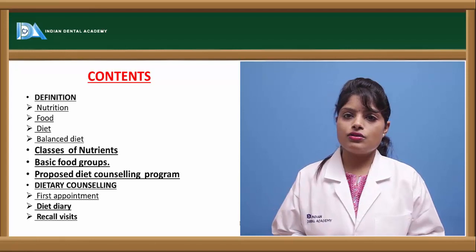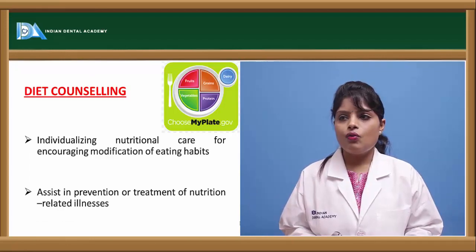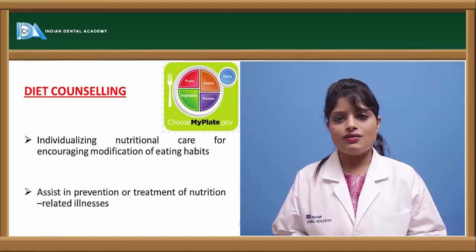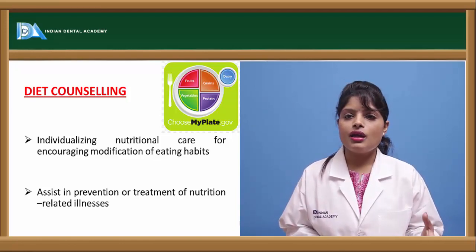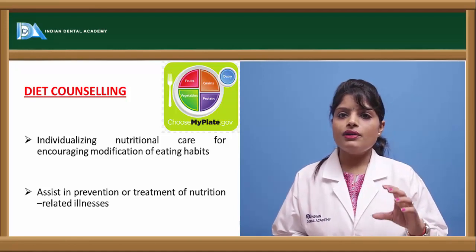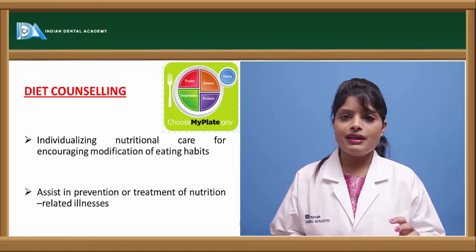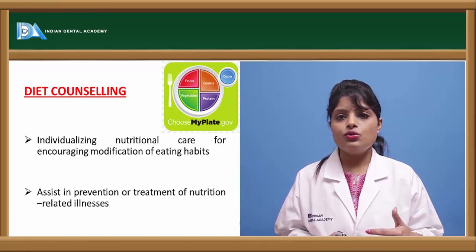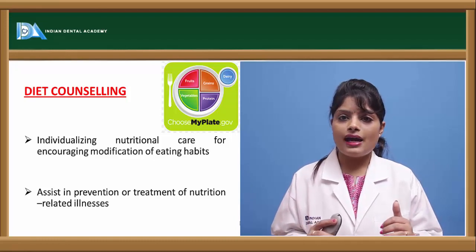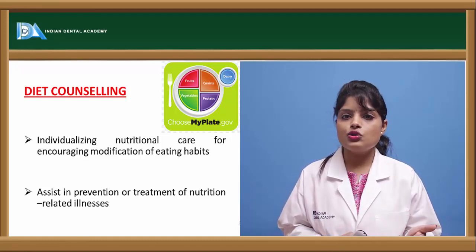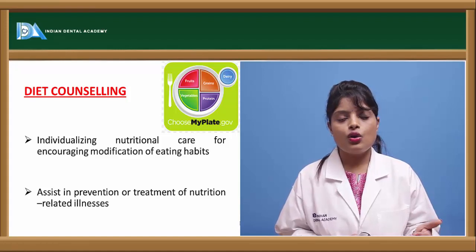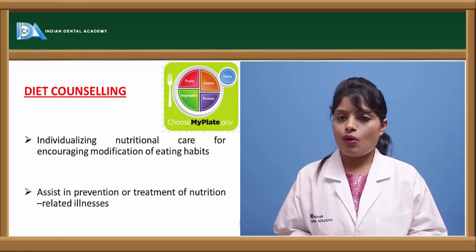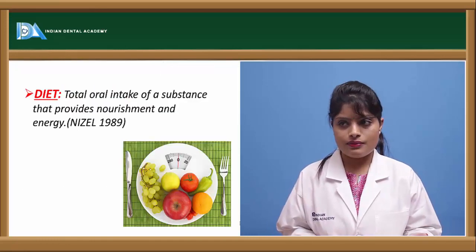What is an individual diet counseling program? The main objectives of the diet counseling program are to plan a proper balanced diet and eliminate any unessential elements from the diet, and to balance the diet of a person. The second objective is habitual dietary modifications, which have to be taught by clinicians to the patient in order to maintain a proper balanced anti-cariogenic diet.